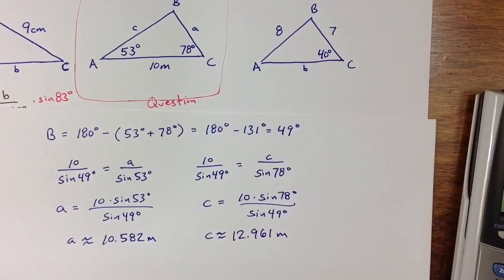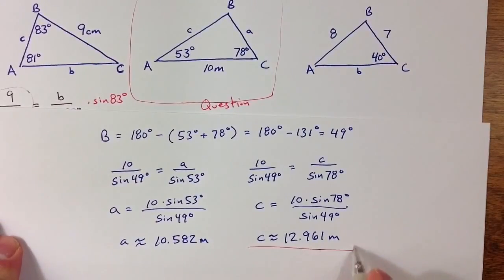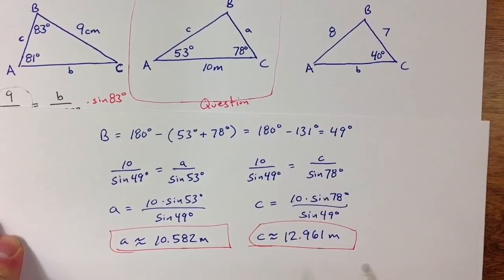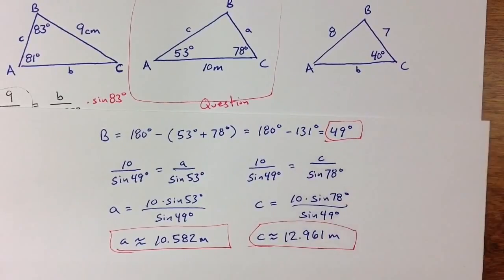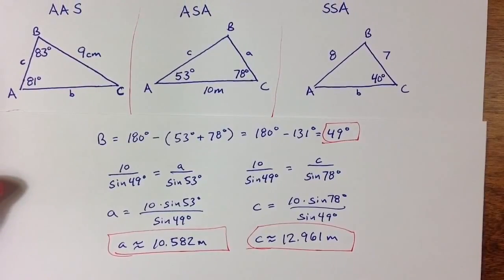We've completed the problem by finding the two unknown side lengths and the unknown angle measure. As I mentioned before, the third problem — side-side-angle — is a little bit more complicated, and that will be discussed in a separate video. I hope you enjoyed this one. Thanks for watching.